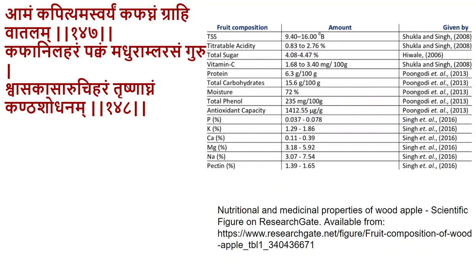Kapittha (wood apple, Feronia limonia): when unripe (aam), it is kapahgnam and grahi. When ripened (pakvam), it is amlarasam, guru, swasakasa-uchiharam, krishnaknam, and kanta-shodhanam. It is popularly used for drinks. Kapittha contains high phenol content and significant antioxidant capacity, and is now also being used as a medicine and claimed beneficial in the management of diabetes.